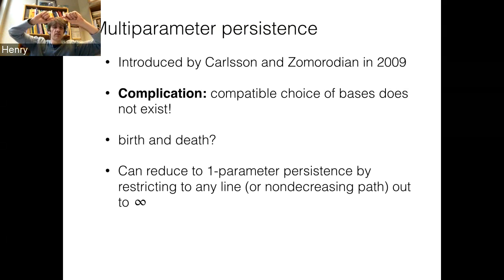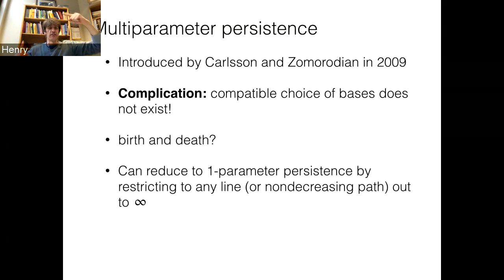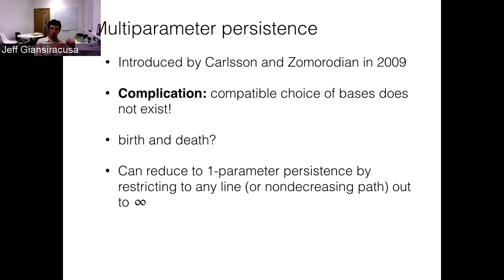A clarifying example: imagine a basis vector that appears in position (1,0) and another basis vector that appears in position (0,1), and they both get mapped to the same thing in (1,1). You can't relate them to each other. If you find that cycle in position (1,1), it can't be assigned a particular birth place because it was actually born in two independent places. That's the challenge.